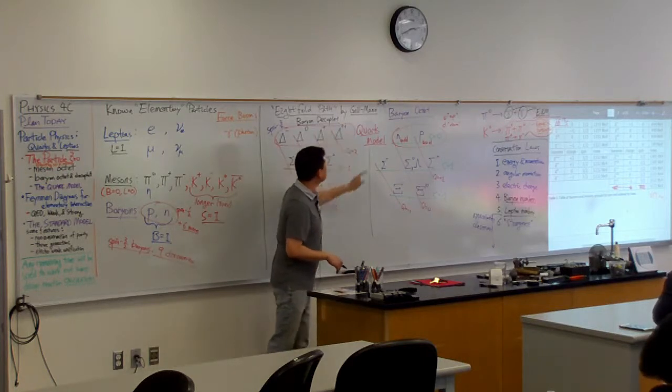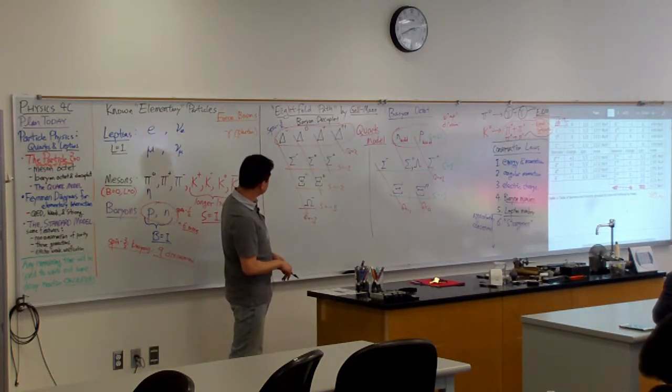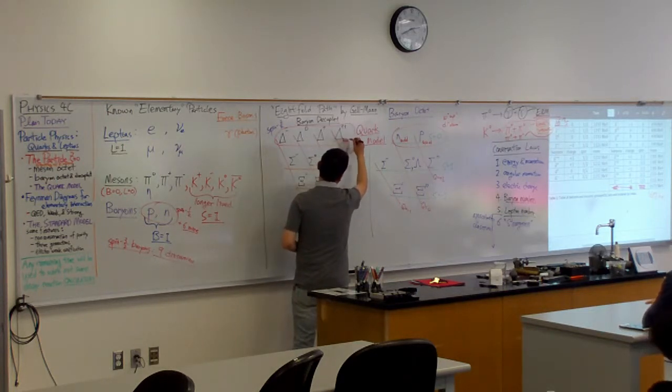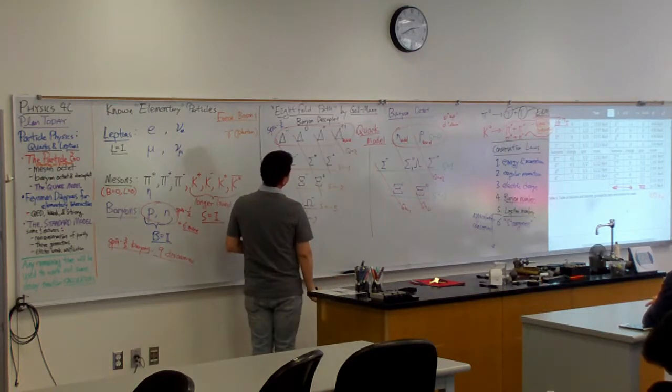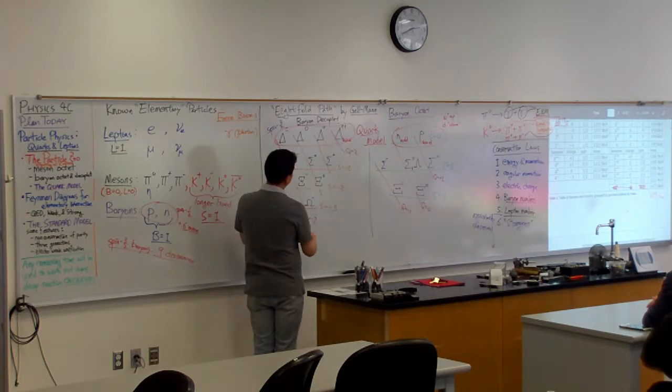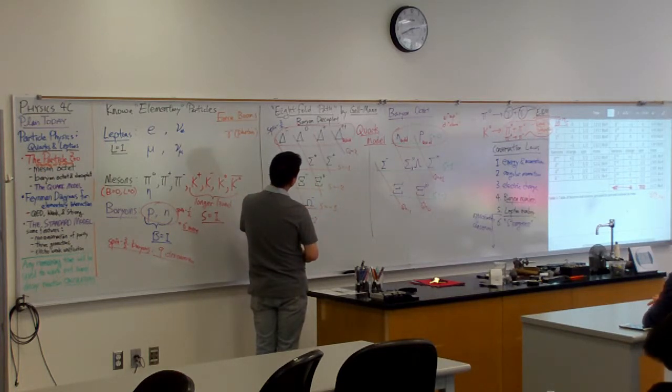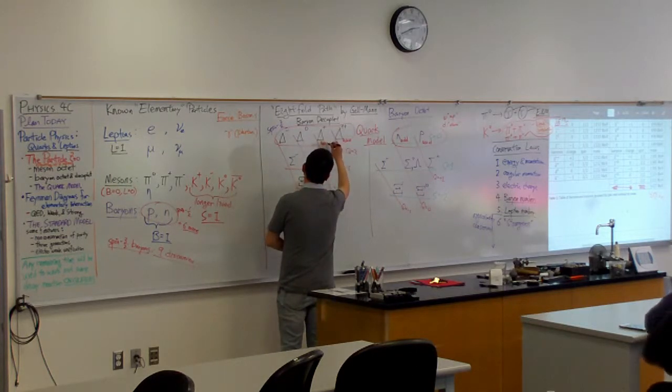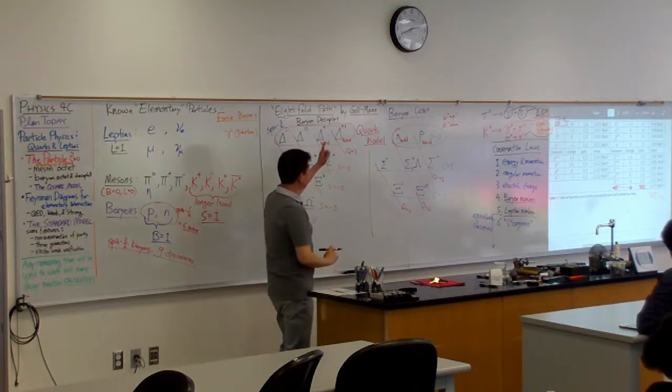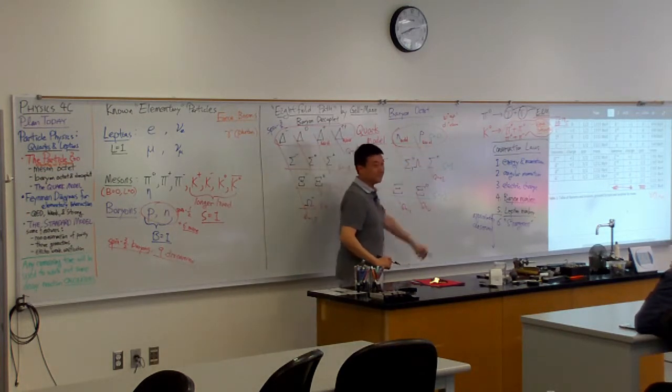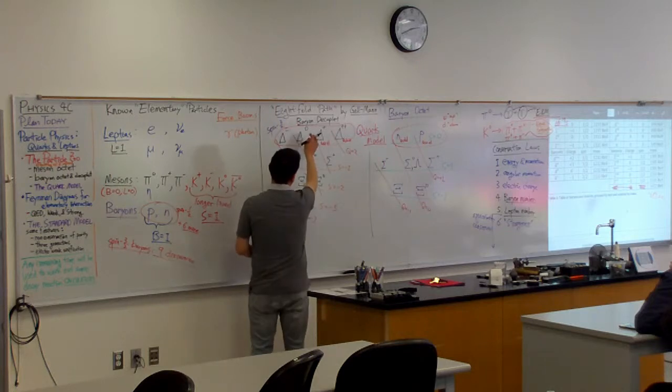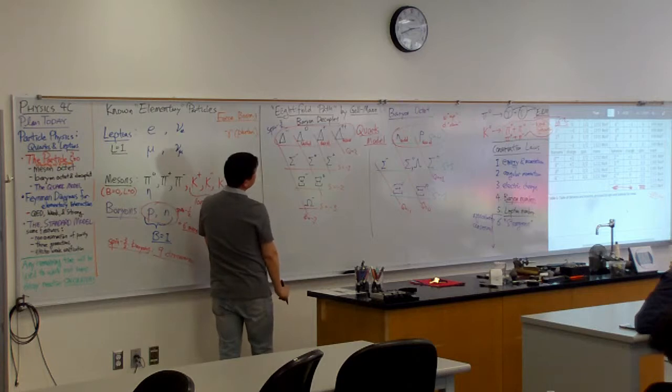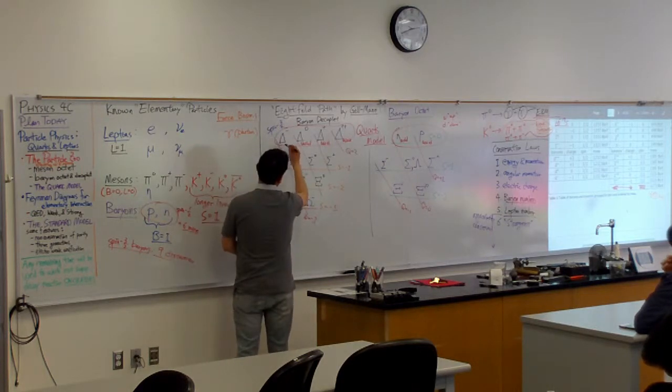So these delta particles, let me see if I can remember it. So this delta plus plus, it should have three up quarks. And I guess I keep just adding down quarks to that. Is that right? Three up, I think that's right. And this would be two ups and a down quark, but somehow combined in a way that's different from proton. And delta zero, it should have one up quark and two down quarks. And this should have three down quarks.